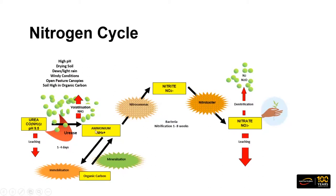Once nitrogen is converted into ammonium, it's quite stable. Then bacteria convert that ammonium nitrogen through into nitrate nitrogen, which is predominantly the source plants take up. Nitrate is negatively charged, in soil solution, in the moisture in the soil — as roots take up moisture, they're taking up nitrate nitrogen. They can take up ammonium nitrogen, but by far the greatest amount taken up is in the nitrate form. Nitrate can also be lost through denitrification as gases, or leached on lighter, sandier soils or with shallow-rooted pasture species.